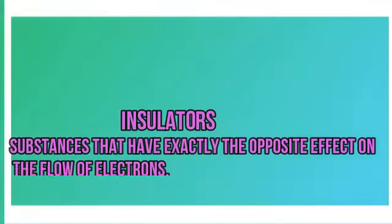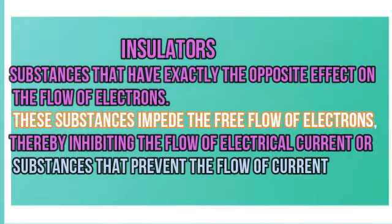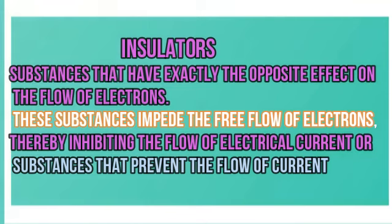Next are insulators. They are substances that have exactly the opposite effect on the flow of electrons. These substances impede the free flow of electrons, thereby inhibiting the flow of electrical current, or substances that prevent the flow of current.